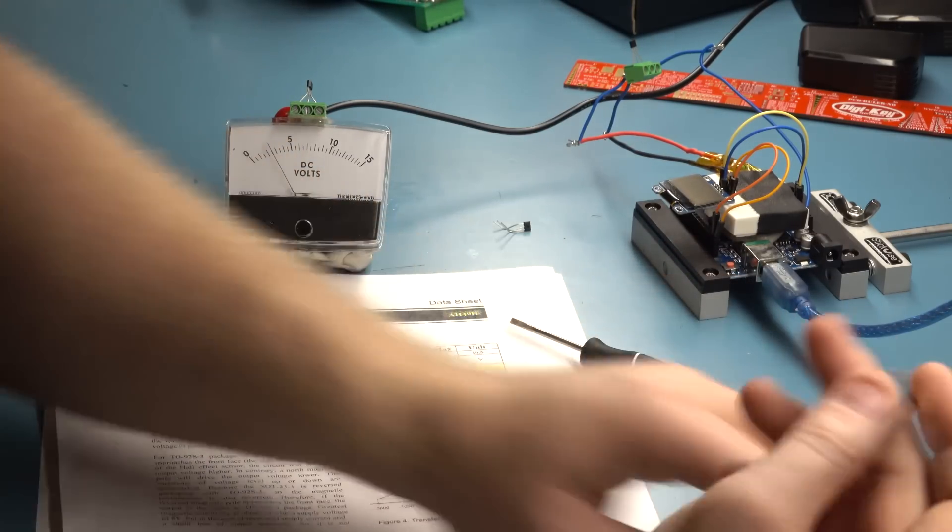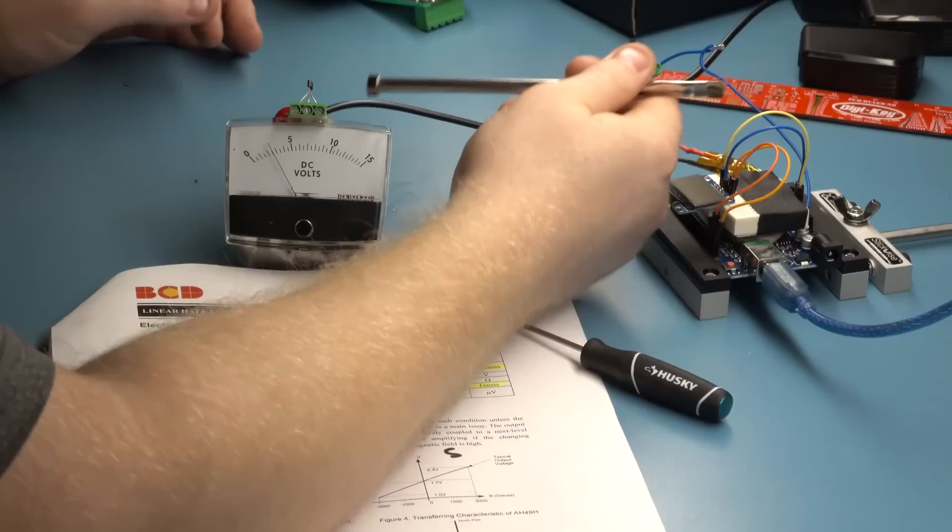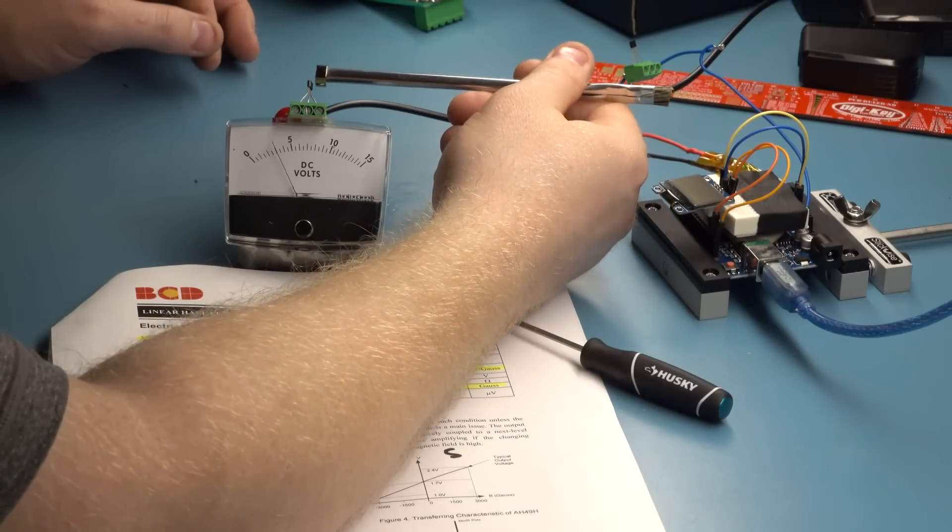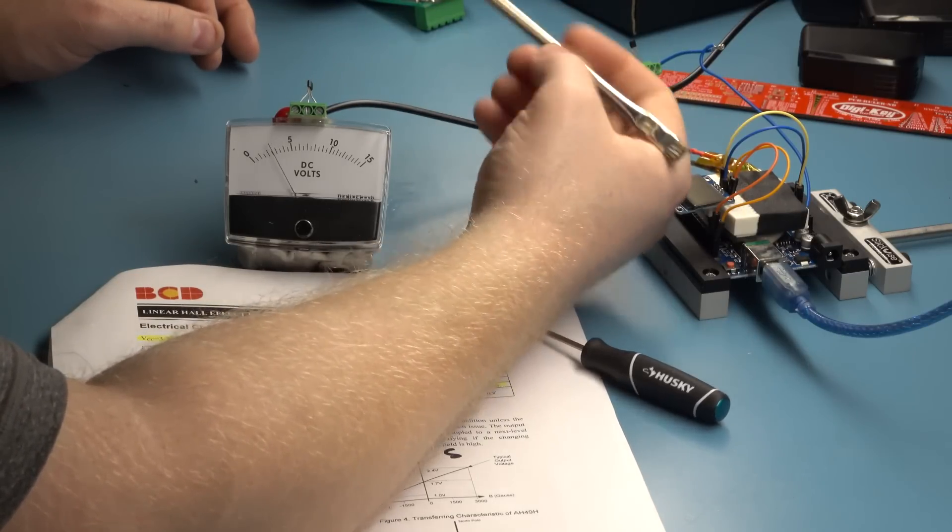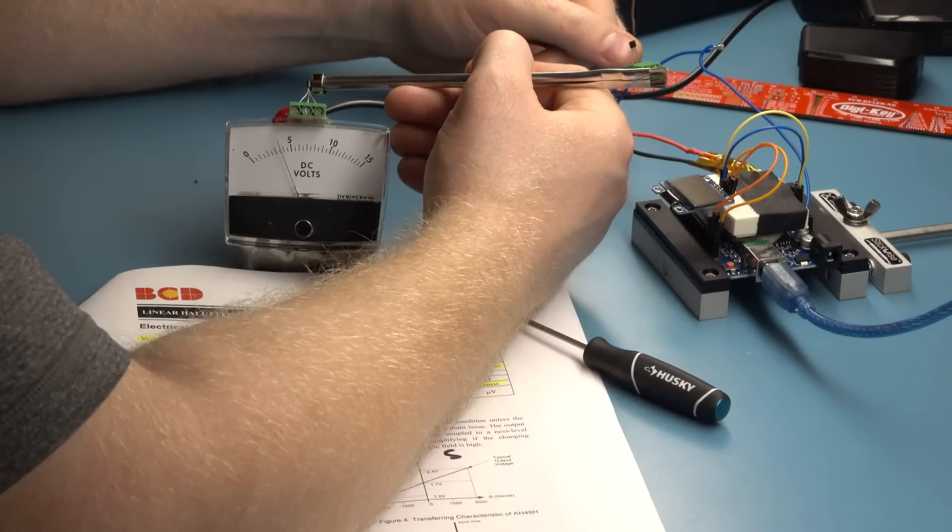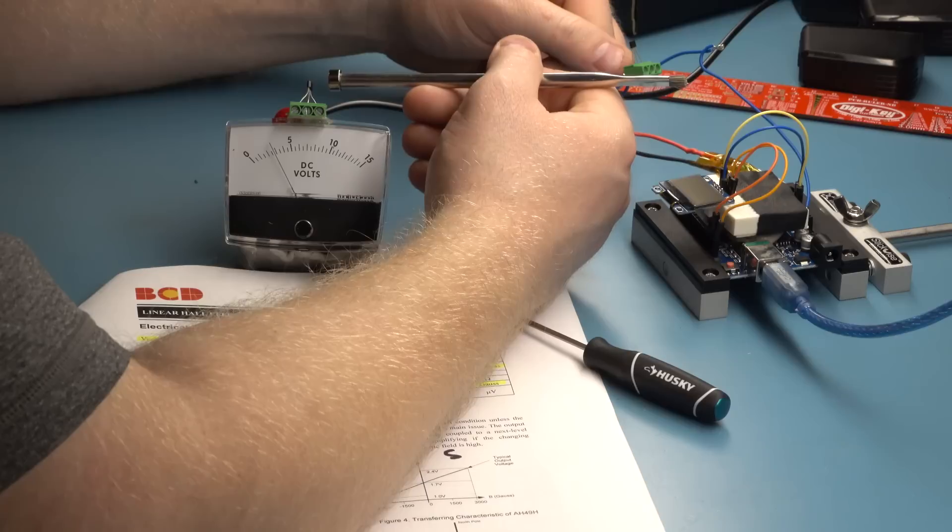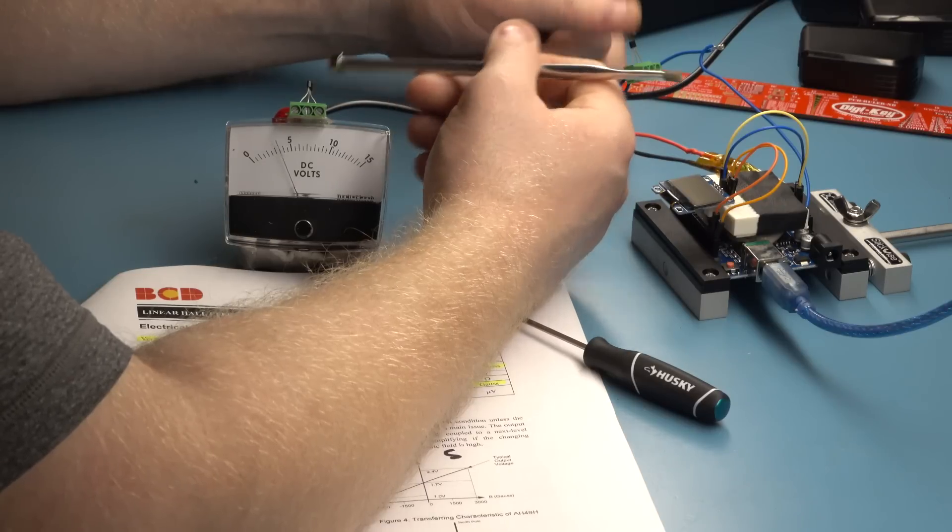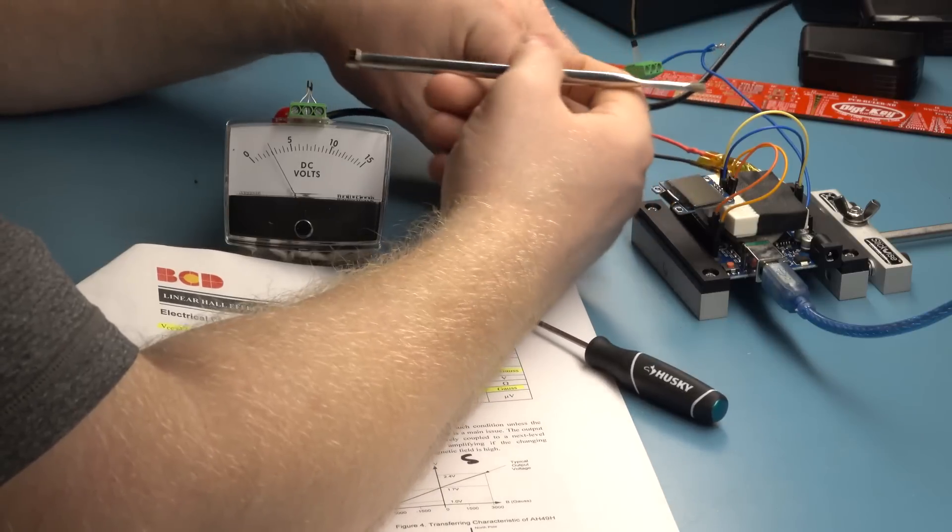You can see we're at 2.5 volts. So you'll notice right away that we have dial movement all the way up to the surface of this magnet. So it is able to tell the difference between here and here, which the other sensor couldn't.